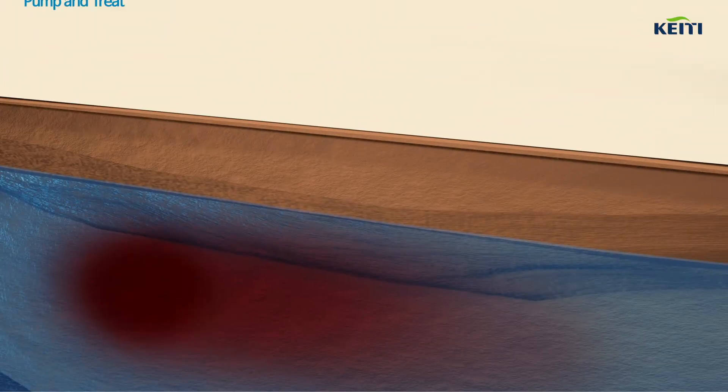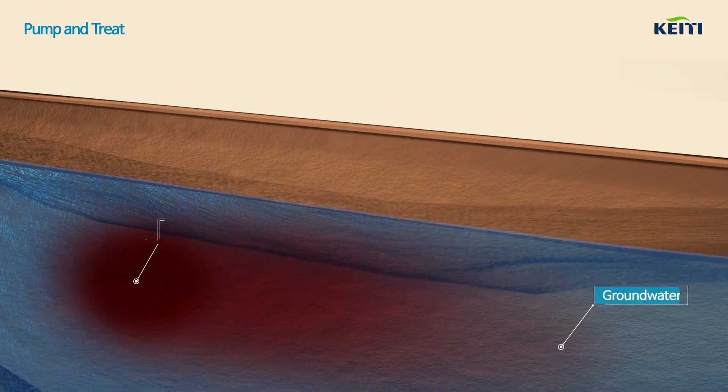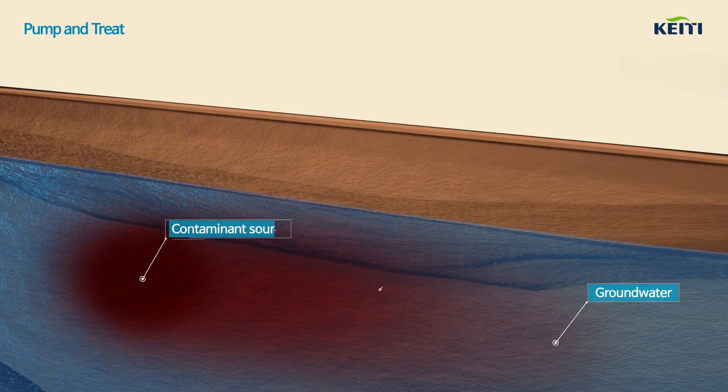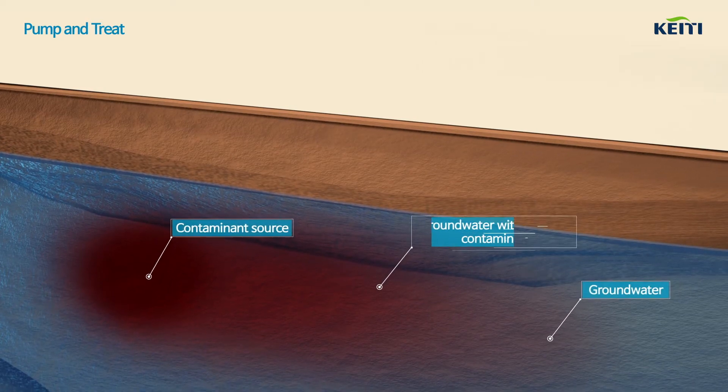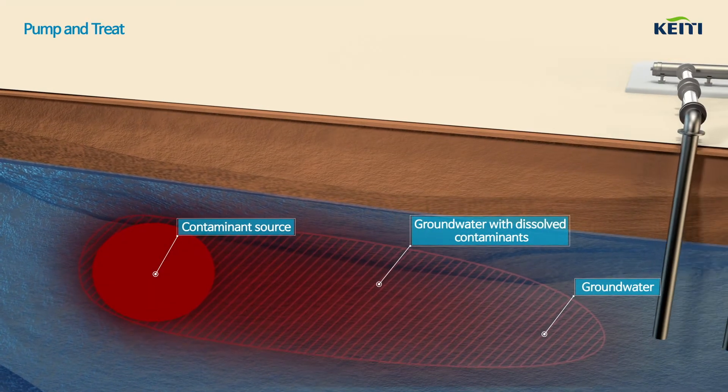The pump and treat method refers to the process of pumping out contaminated groundwater through wells to treat it with an above-ground treatment system.